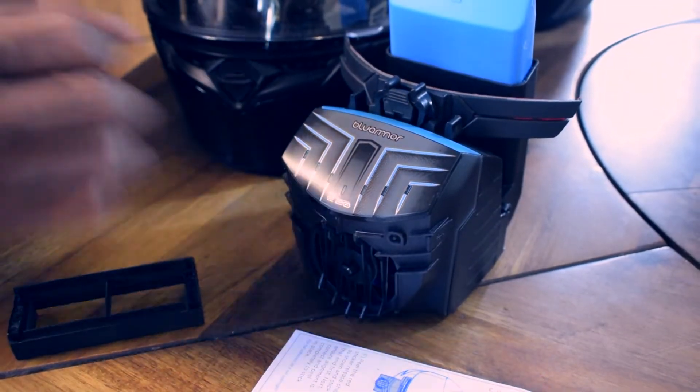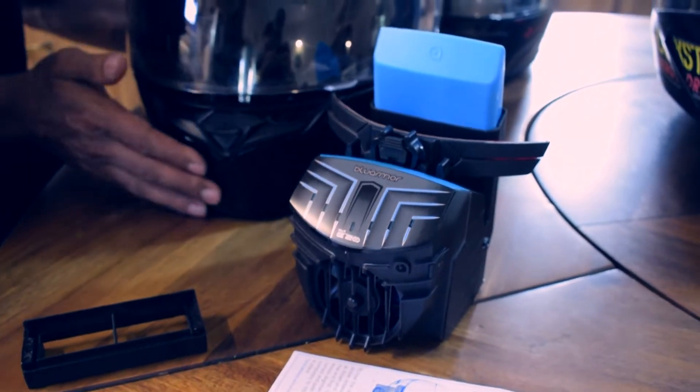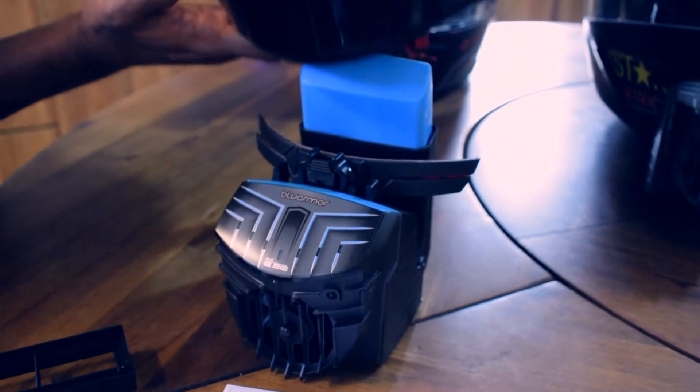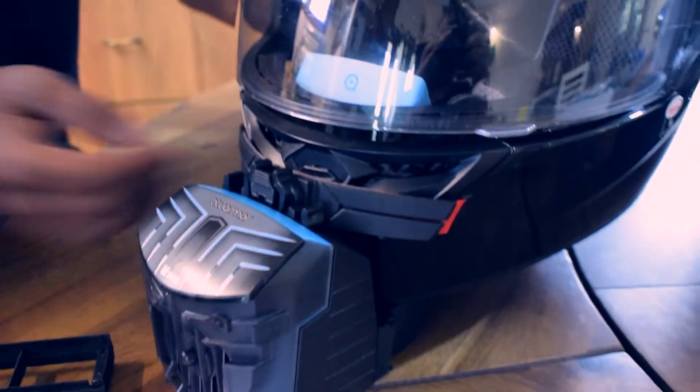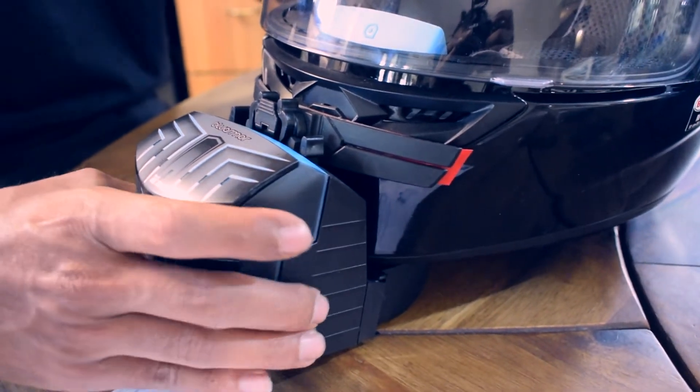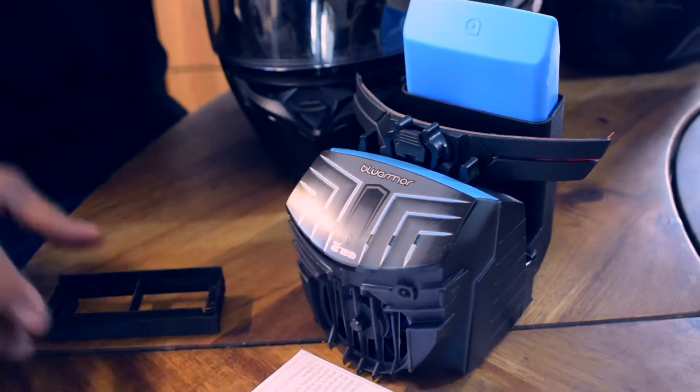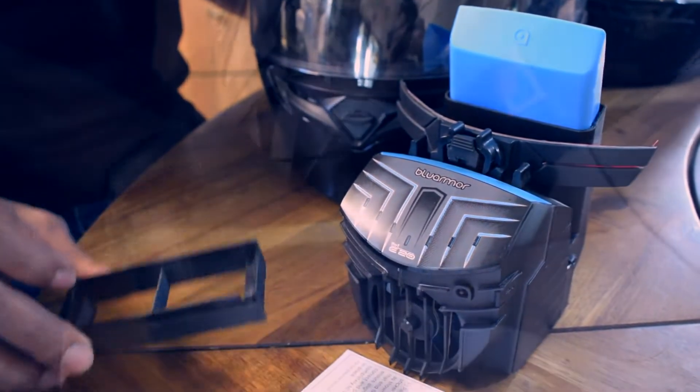Step one: Place the device on a flat surface, then take your helmet and place it over the device like this. Make sure that it slides in freely and smoothly. In case you have difficulty or it's a tight fit, you will require the extender as shown, which is available in the box.